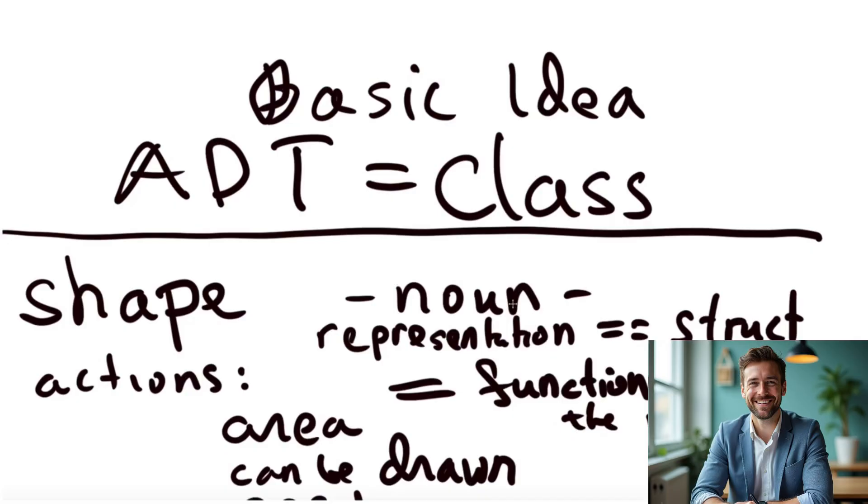The basic idea that makes C++ a modern language as opposed to C as an old-style 1970s system implementation language is that C++ added classes.